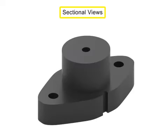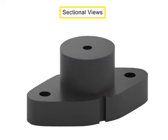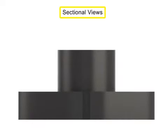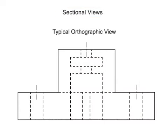Sectional views are very useful when there is geometry on the interior of a part that's difficult to understand from looking at typical orthographic or isometric views. They are also very useful in dimensioning the drawing. Sectional views allow us to dimension the interior of a part without dimensioning to hidden lines, which is considered a poor convention.